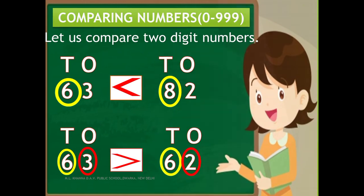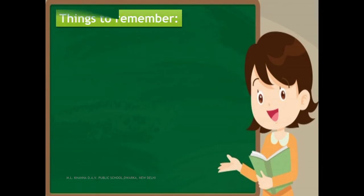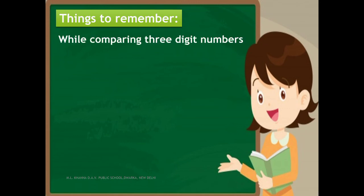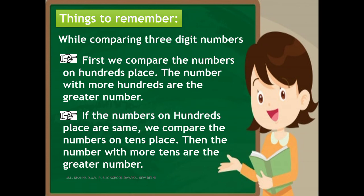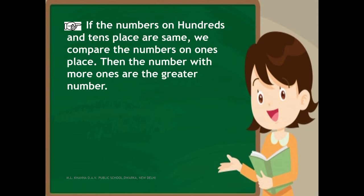Now I will tell you how to compare three-digit numbers. There are three important points to remember. First, we compare the digits at the hundreds place — the number with more hundreds is the greater number. Second, if the digits at the hundreds place are the same, we compare the digits at the tens place. Third, if the digits at both the hundreds and tens places are the same, we compare the digits at the ones place — the number with more ones is the greater number.